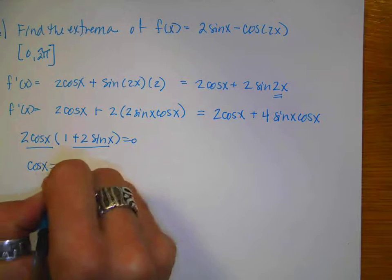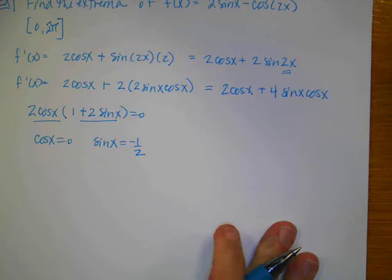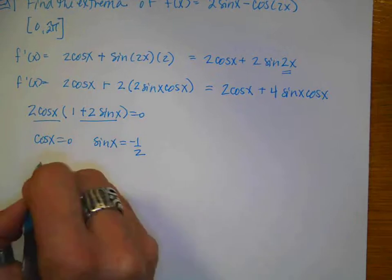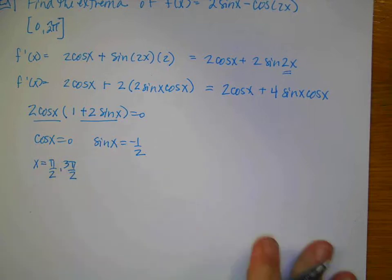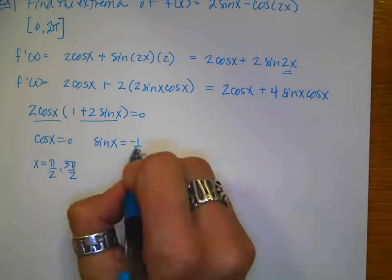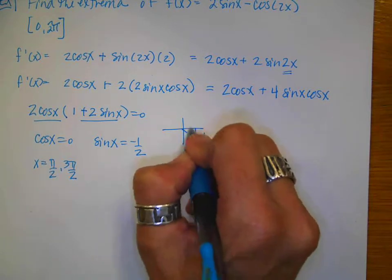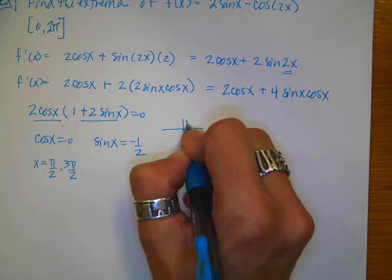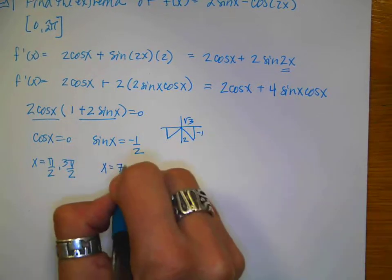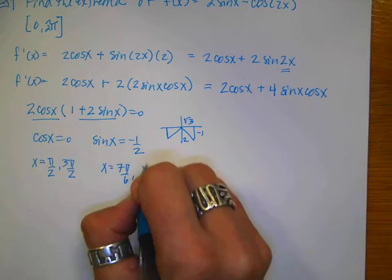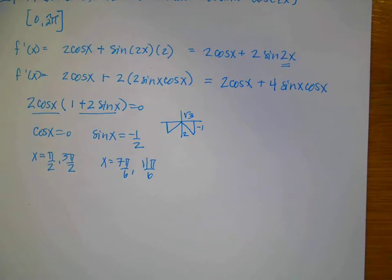Now I have two equations: cosine of x equals 0 and sine of x equals negative one half. Cosine is 0 when x is π over 2 and 3π over 2. For sine of x equals negative one half, that gives x equals 7π over 6 and 11π over 6.